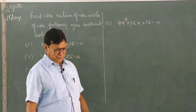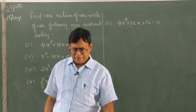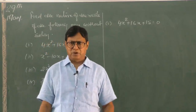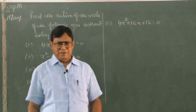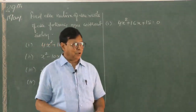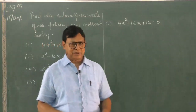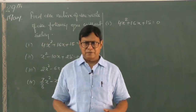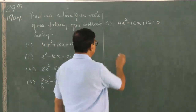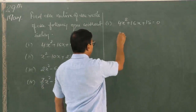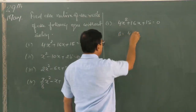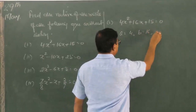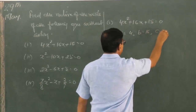The first equation says: find the roots of the equation without actually solving it. To find the nature of the roots, we only need the discriminant — that is the value of B squared minus 4AC. So A is 4, B is 16, C is 15.